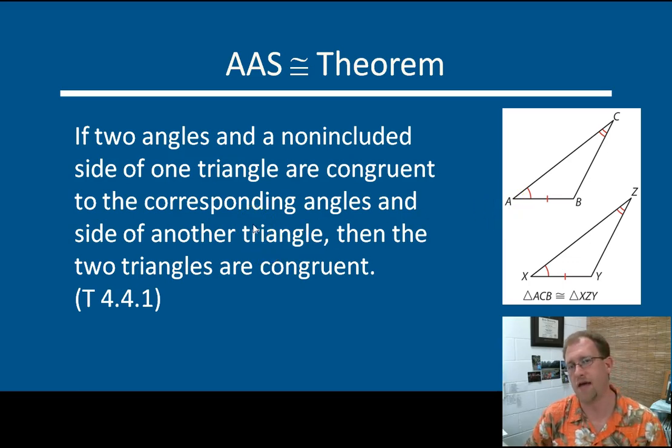That's the angle-angle-side theorem. And if you try to construct a triangle like this with the same measures of angles and the same length of side, and you try to draw it with different lengths here, it won't work. So you again wind up with forcing congruent triangles. And if you have angle-angle-side, you have congruent triangles.